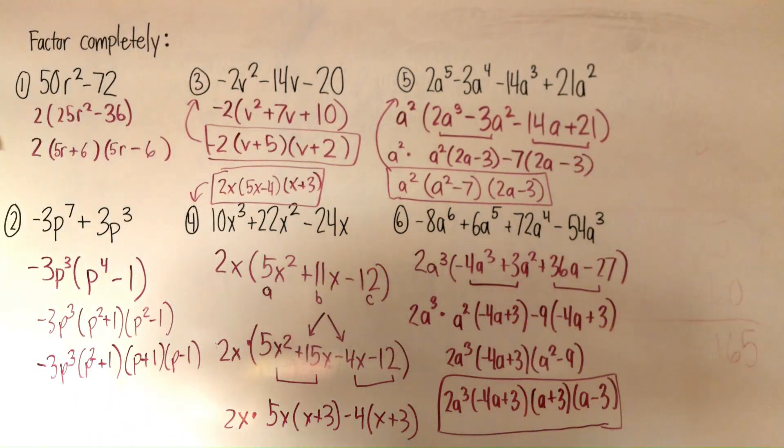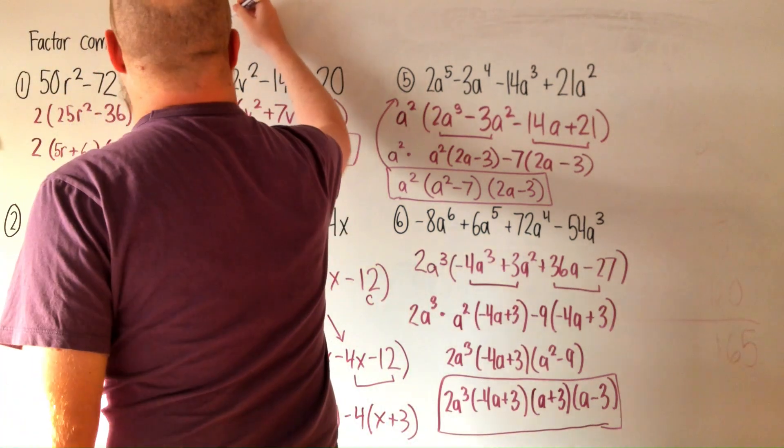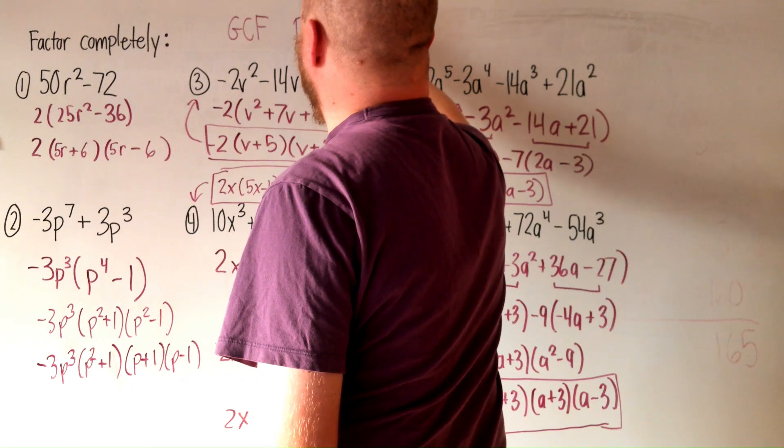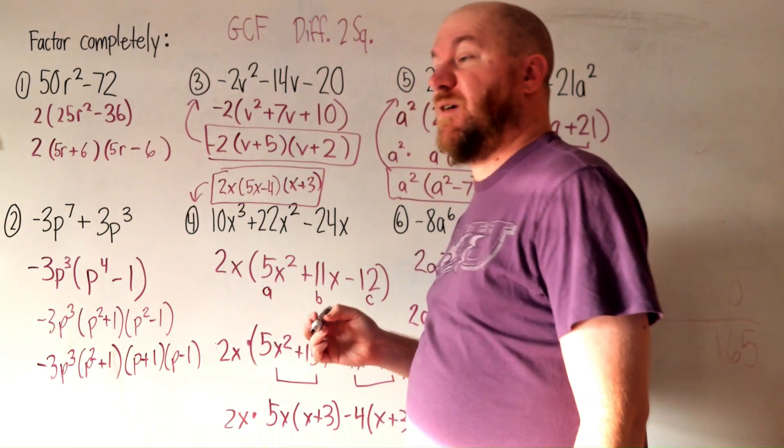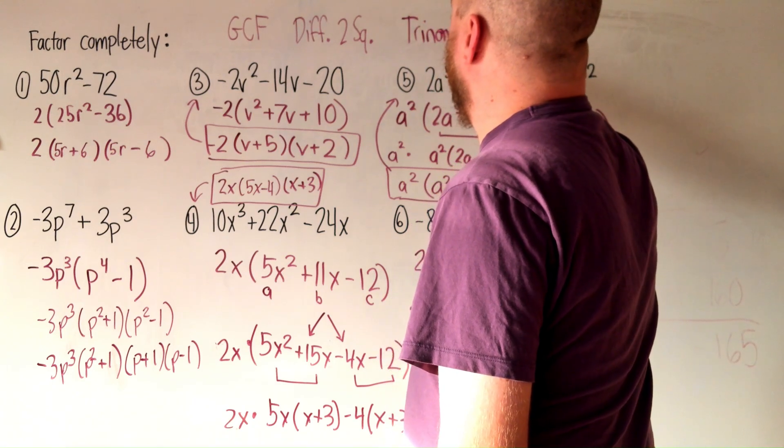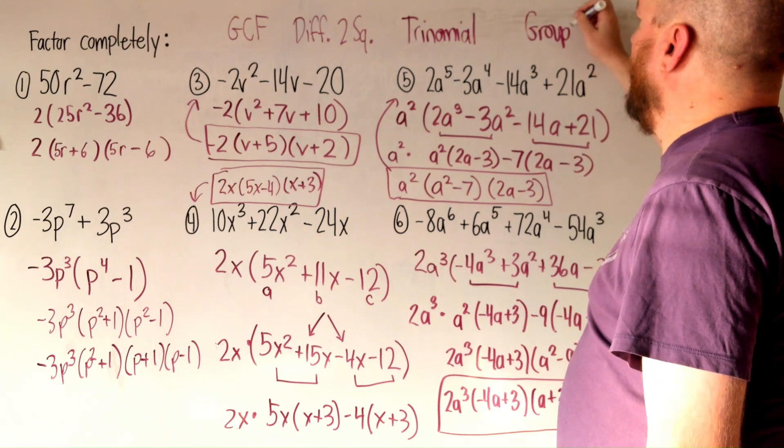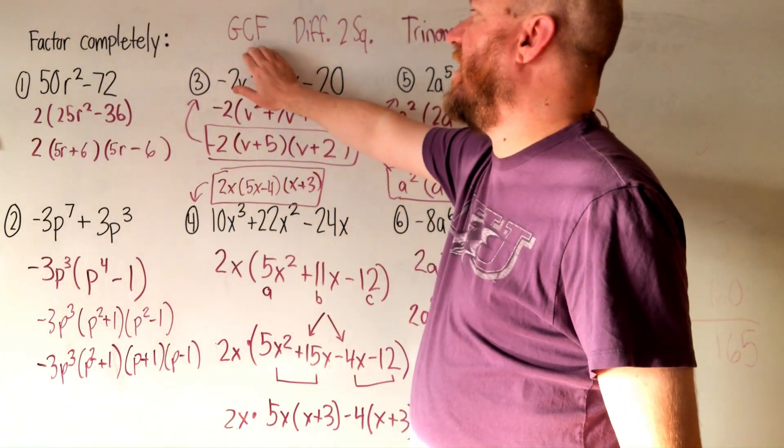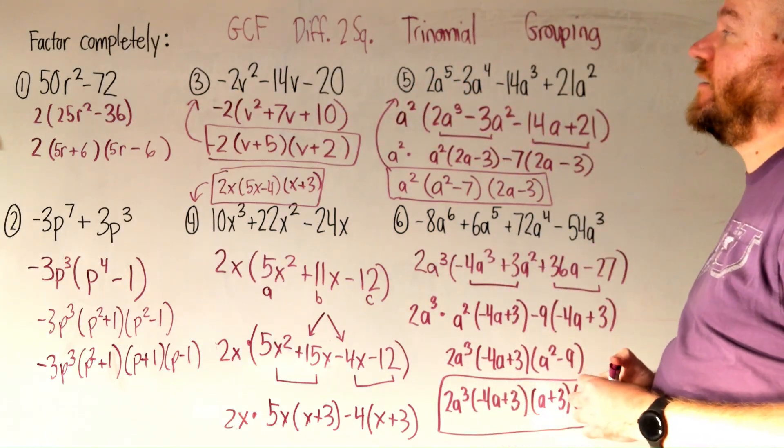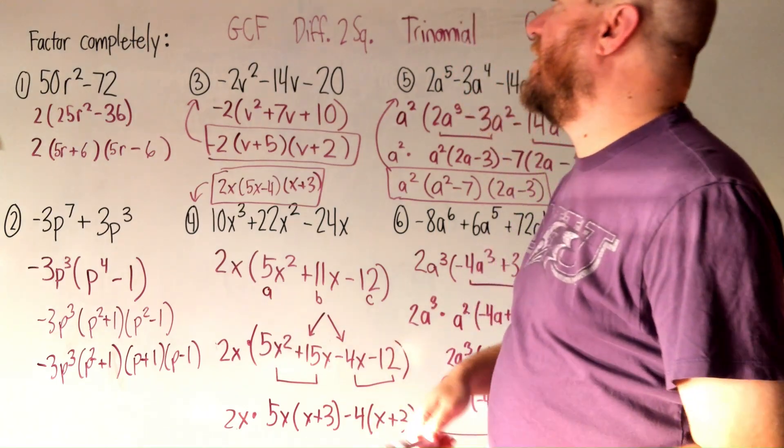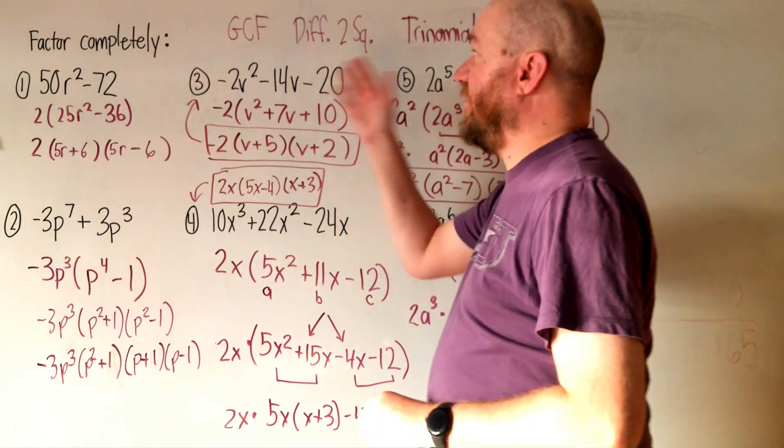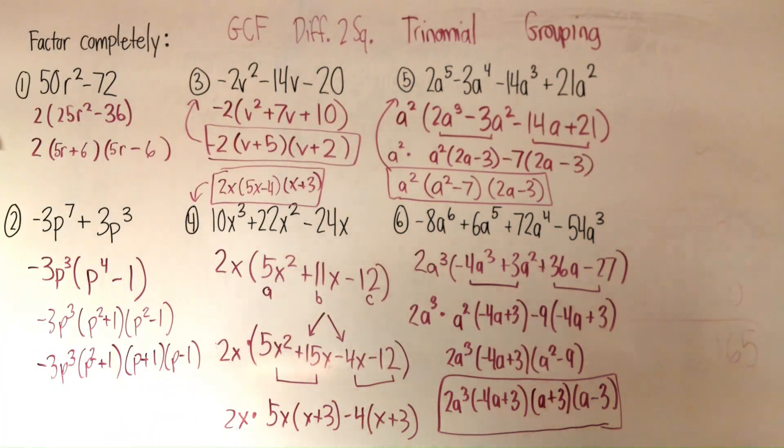So just to recap, when we're factoring, we want to try GCF as one of our factoring methods. We also want to look for a difference of two squares. We also want to try trinomial. We also want to try grouping. So any of these things could be an option. And sometimes you're going to have to do multiple. And I would say always try GCF first and then look for these three. And sometimes you have to look at these three multiple times after you GCF. And you might do multiples. You might do GCF and difference of two squares and trinomial or something like that. So those are the methods of factoring. Be careful when you're factoring completely that you haven't stopped until everything's factored completely. Thanks for watching. Have a good day.